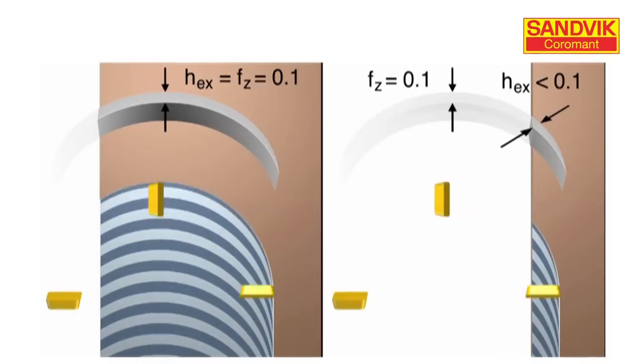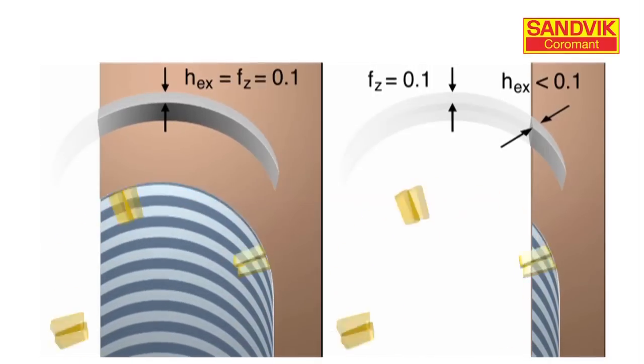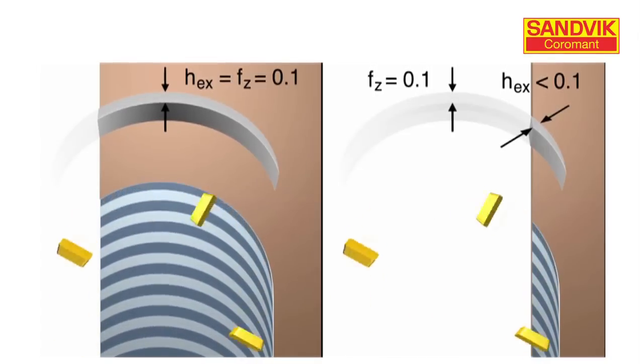On the left side, we've illustrated the best possible position. The cutter diameter is being optimized, and we're generating a thick to thin chip.